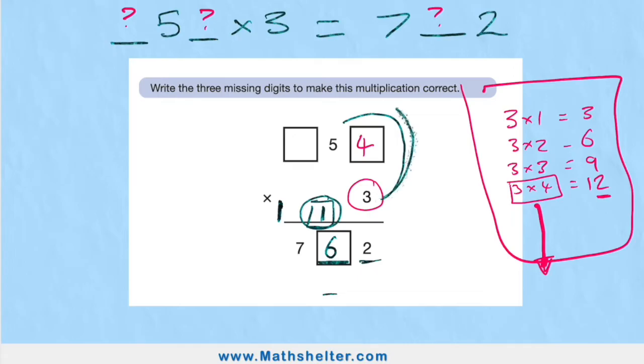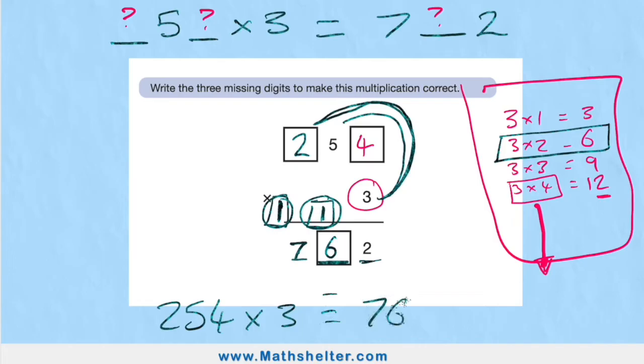And then the next one is 3 times something equals 7. But actually it's not 7 because I'm going to be adding a 1 to it. So it's actually going to be 3 times something equals 6. And 3 times 2 equals 6. So I'll add my 2 in here. 3 times 2 is 6. And my 1 equals 7. So I think the question should have been 254 times 3 equals 762. Not too easy, but definitely doable.